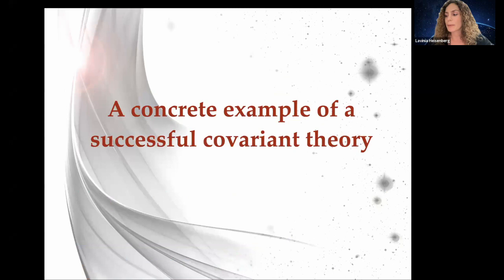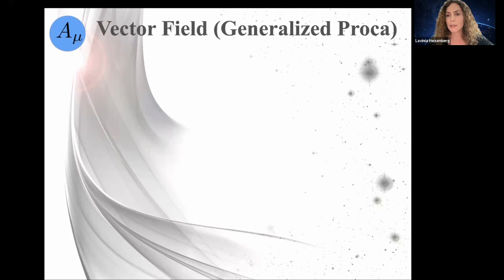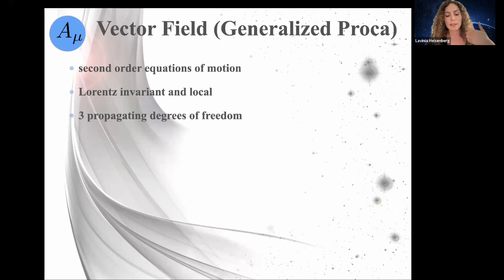As a concrete example, consider generalized Proca theories — vector field theories constructed to satisfy second-order equations of motion, Lorentz invariance, locality, and three propagating degrees of freedom. Imposing these conditions yields the most general Lagrangian for a massive vector field. It was long believed a single vector field would conflict with the cosmological principle, but generalized Proca theories changed this view.